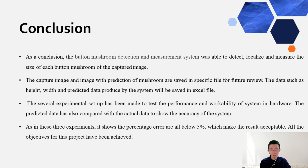Now for the conclusion, the button mushroom detection and measurement system was able to detect, localize, and measure the size of each button mushroom. The captured images with predictions are saved in specific file for future review. The data such as height, width, and predicted data produced by the system is saved in Excel file. Several experiment setups have been made to test the performance and workability of the system. The predicted data was compared with actual data to show accuracy. In these three experiments, the percentage error is all below 5%, making the result acceptable. All the objectives for this project have been achieved.